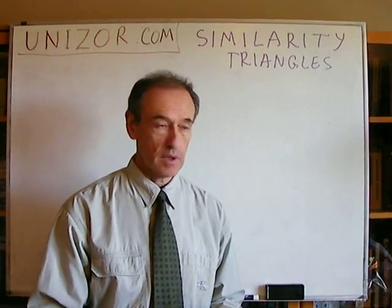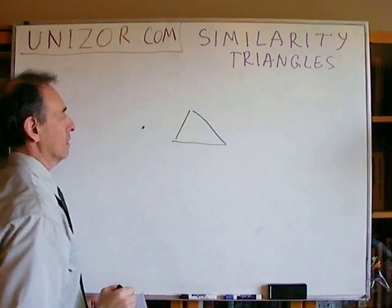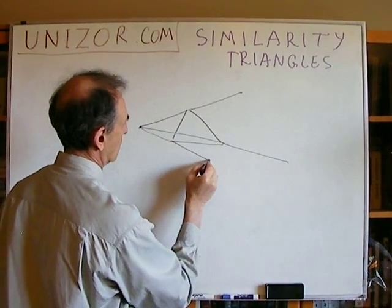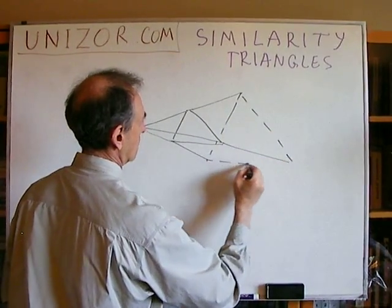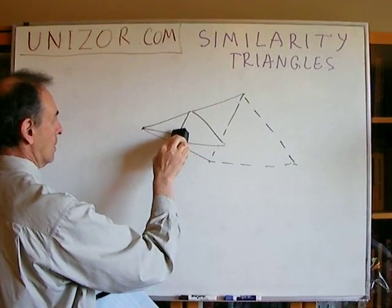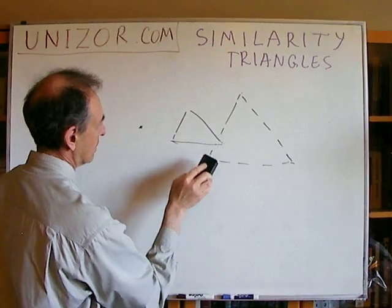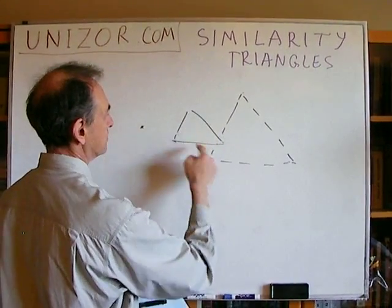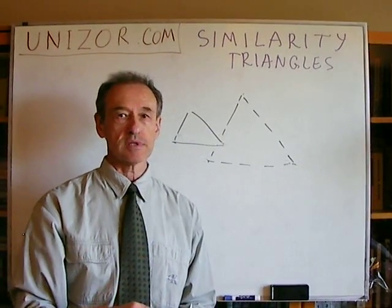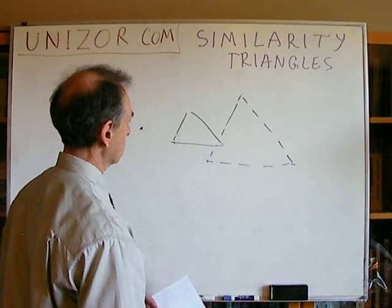Therefore, if you have a triangle and some center of scaling — let's say scaling by a factor of two — it goes this way, and that would be our new triangle. This new triangle is similar to the original triangle. Its angles are exactly the same, and the sides are proportional — the ratio between the lengths of any corresponding sides is exactly the factor of scaling.